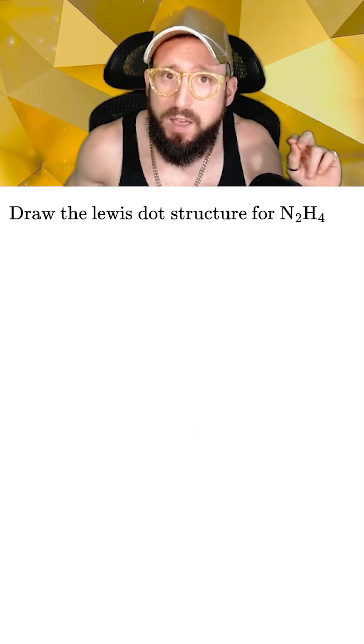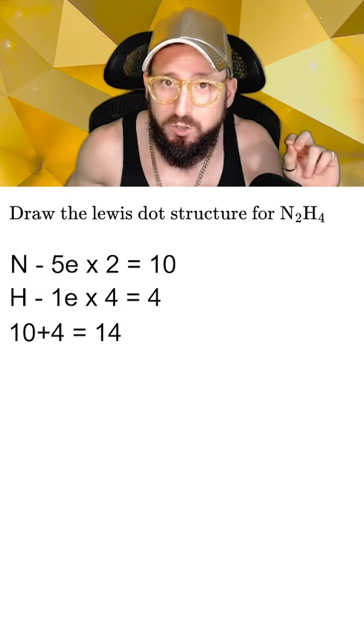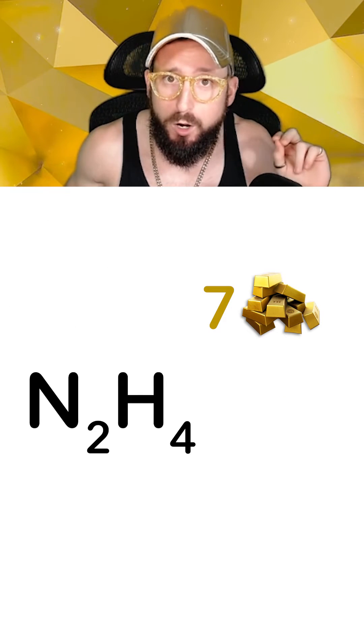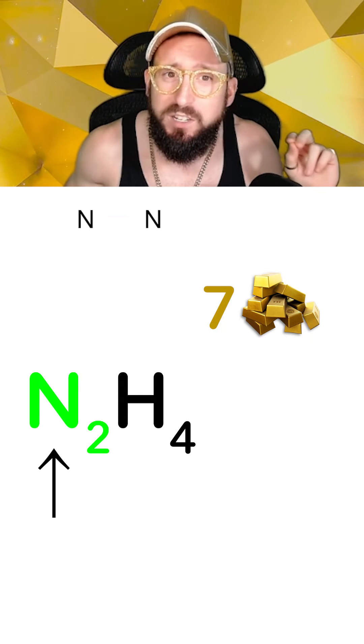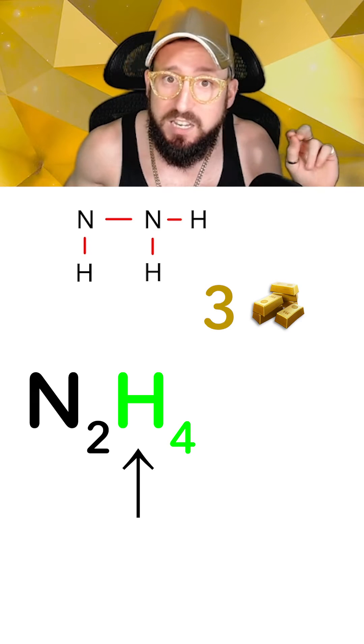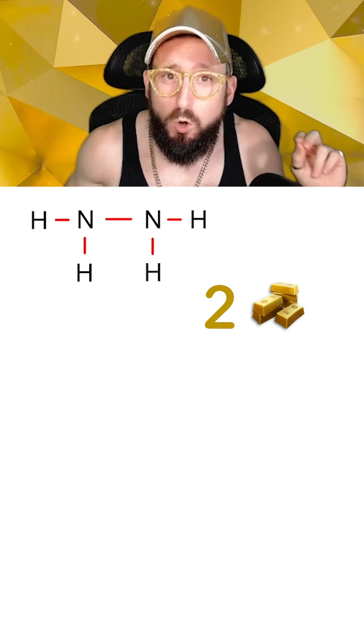Now let's try something harder. Here we have N2H4, which we're going to do the same thing in adding up the total number of valence electrons, dividing by two, and getting seven bars to work with. Starting our drawing off, the nitrogens will be in the center, and we'll need to connect them together with a bar. Now drawing the hydrogens, we're going to connect two to each nitrogen. Nature usually wants things to be symmetric. Now we see that we have used a total of five bars, which means we have two bars left.